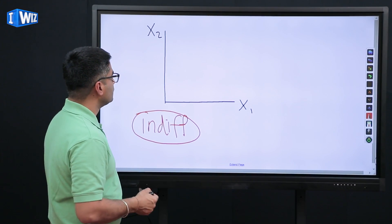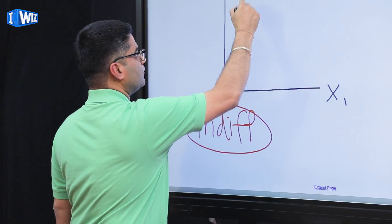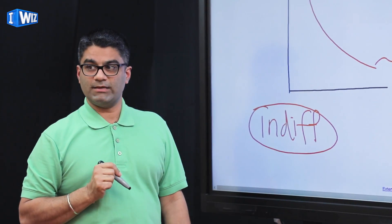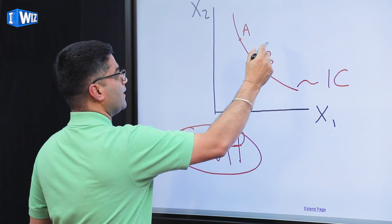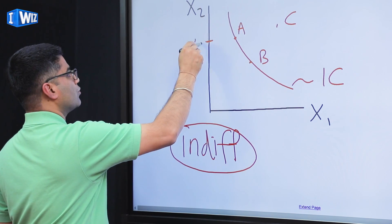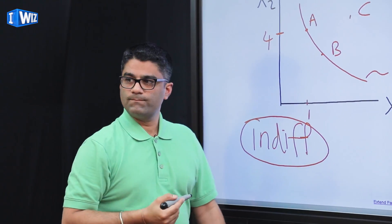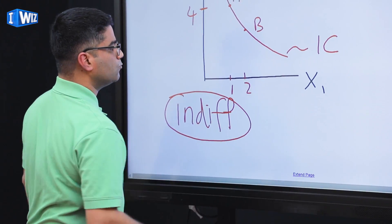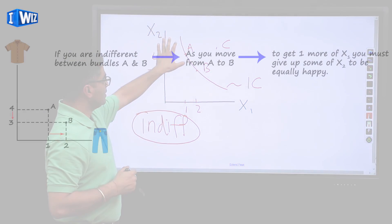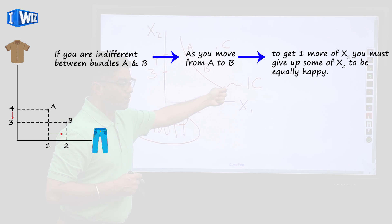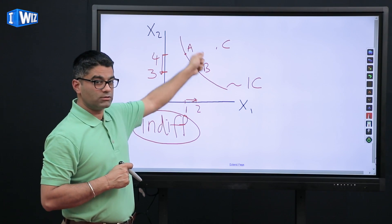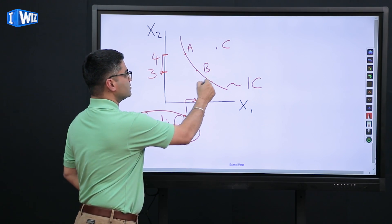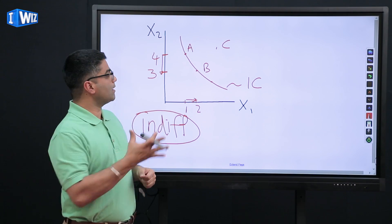If you are equally happy between all bundles, the indifference curve looks like this. Let me put some points on here — bundle A, bundle B, and bundle C. Bundle A gives you four units of good two and one unit of good one. Bundle B gives you two units of good one and three units of good two. On this indifference curve you're equally happy between every bundle — as you get more of x1, you must give up some of x2.